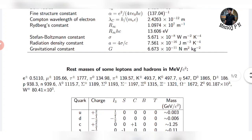The gravitational constant G is also important. These constants have huge applications in Physics, and accurate experimental results are physically significant.